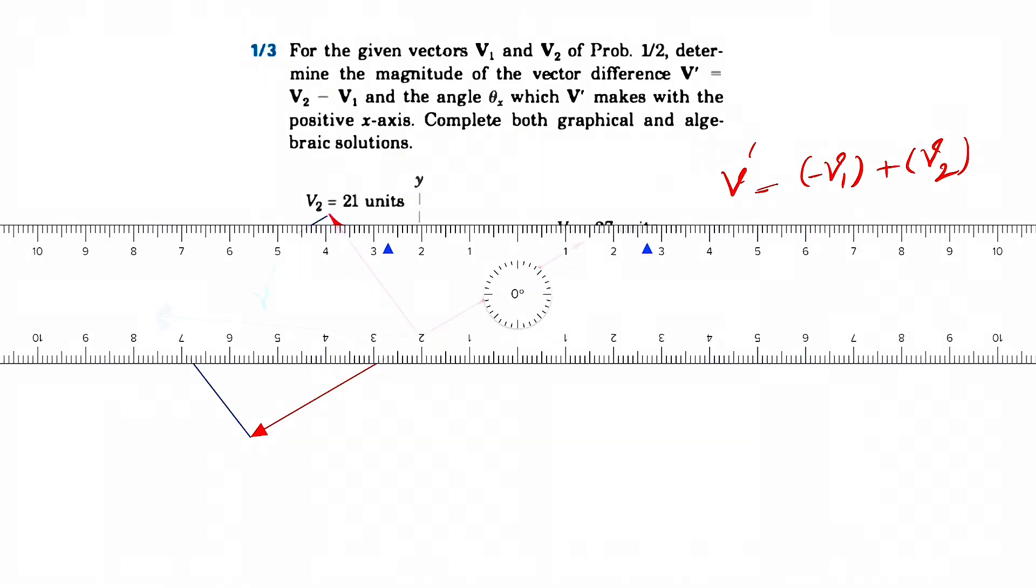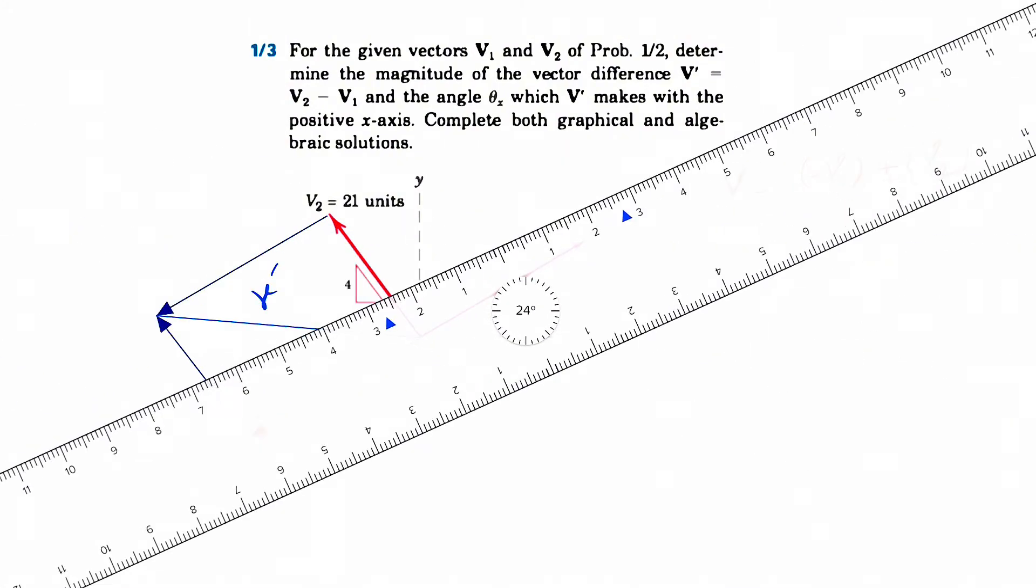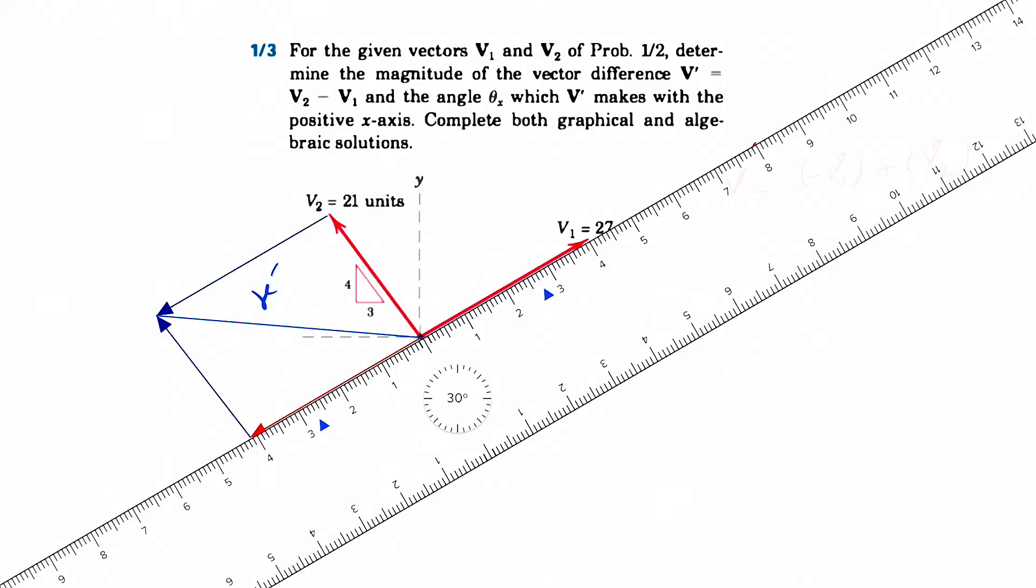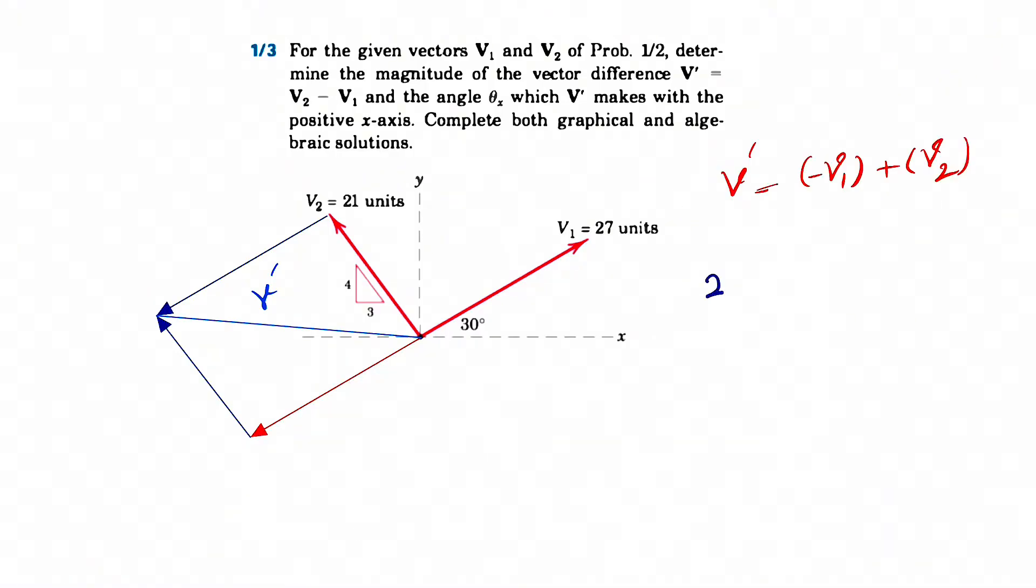So using the graphical method, we're just going to get our ruler, see what we have for each of these. So as we can see, the length of V1 is around four centimeters. So our 27 units is going to be proportional to 4 centimeters.